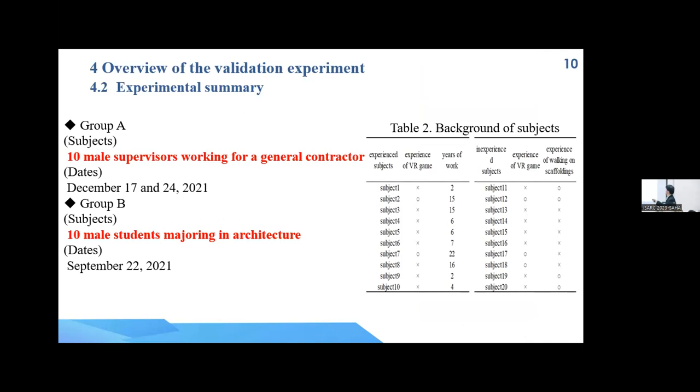And for the experiment, there are two groups. Group A is the experience group: ten male supervisors working for a Japanese construction company. And Group B is the inexperience group: ten male students in the university.